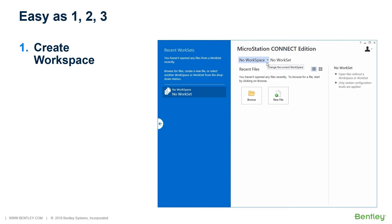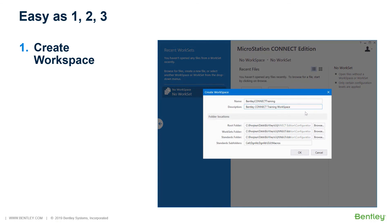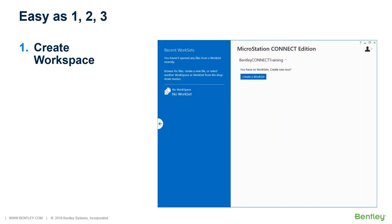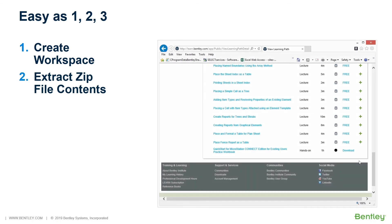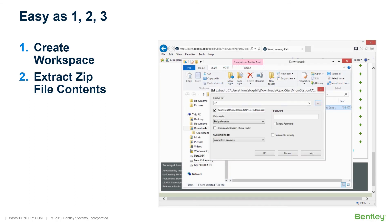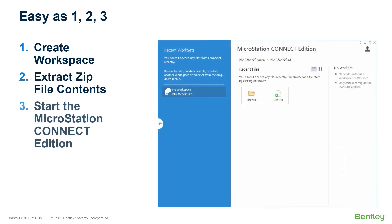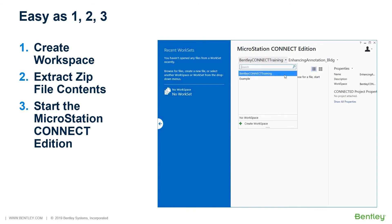There are three steps to begin your training. The first is to create the workspace — remember, you need only do this once. Next, download and unzip your particular course dataset from the practice workbook downloaded from the Learn Server. Unzip the file to the root of the C drive; the zip file contains the directory structure to put the data in the correct locations. Finally, start the MicroStation Connect Edition and set the workspace to Bentley Connect Training and the workset to your particular training course.